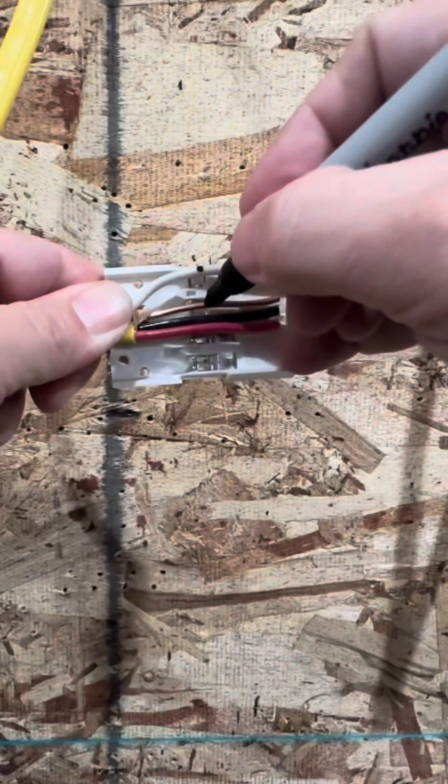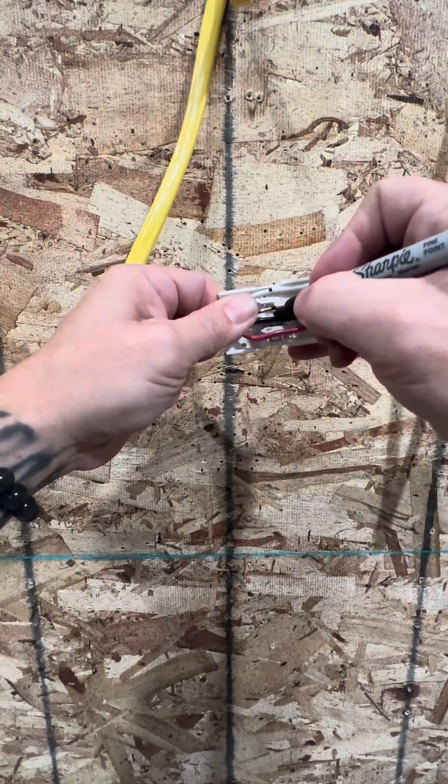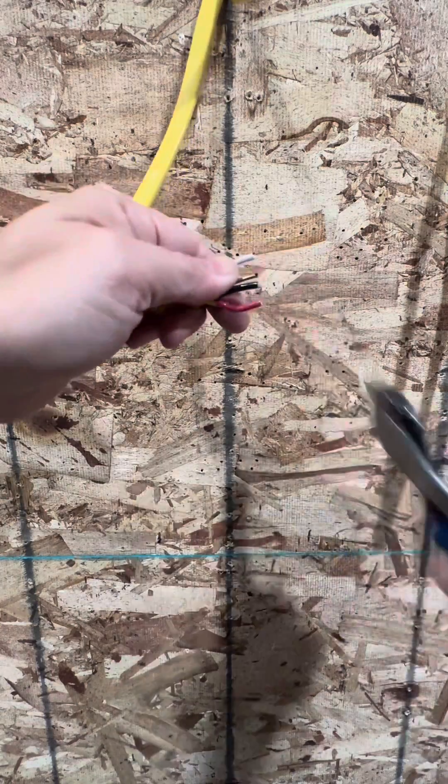And throw them out. And then let's line up our conductors right where the contact pieces are on this splice kit, mark them, and then cut them.